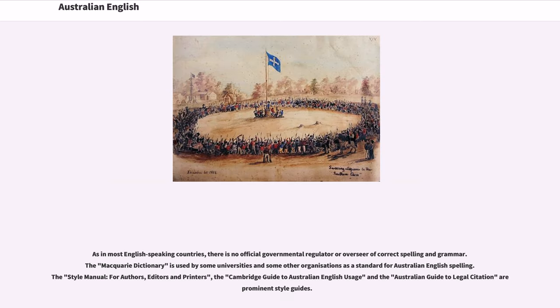As in most English-speaking countries, there is no official governmental regulator or overseer of correct spelling and grammar. The Macquarie Dictionary is used by some universities and some other organizations as a standard for Australian English spelling. The Style Manual for Authors, Editors and Printers, the Cambridge Guide to Australian English Usage and the Australian Guide to Legal Citation are prominent style guides.